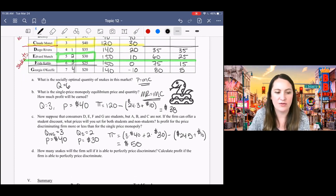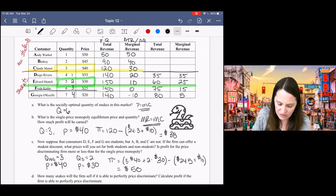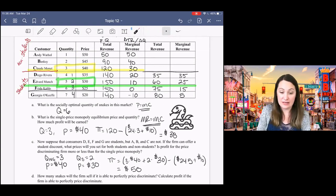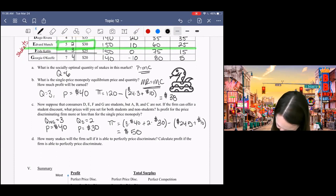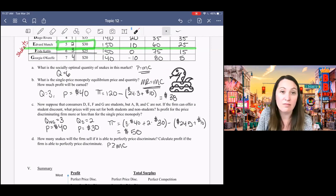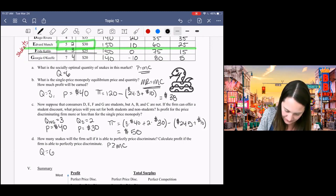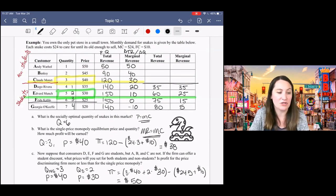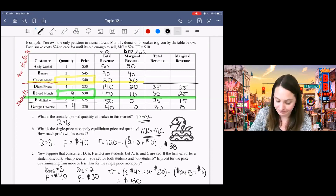All right. And then the last question is how many snakes will the firm sell if it can perfectly price discriminate? Calculate profit for perfect price discrimination. All right. So the first part is pretty easy because we already answered this question. The firm here is going to sell as long as the consumer reservation price is greater than or equal to marginal cost, which is the same condition we use to find the socially optimal quantity, right? These will always be the same. So we get here a quantity of six. Does not make sense to sell a snake to Georgia O'Keeffe because Georgia O'Keeffe is not willing to pay $24. Georgia O'Keeffe is only willing to pay $20, but it costs us $24 to grow a snake. And so there's no world in which it would be profitable to sell a snake to Georgia O'Keeffe. You can quote me on that.